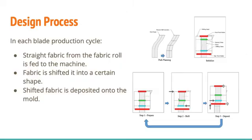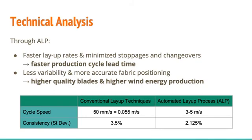The machine would create a shift in a cycle of coordinated motion. In each cycle, the machine feeds straight fabric from the fabric roll, shifts the fabric to a certain shape, deposits the shifted fabric onto the mold, and then prepares for the next cycle. Successive cycles of shifting would result in a piece of fabric with a curved shape. Technical analysis of the process shows that ALP significantly increases layup speed and also reduces deviation between blades, as shown in the table. This means that ALP would ensure blades are ready in much less time, and higher quality products could generate more energy from the wind.